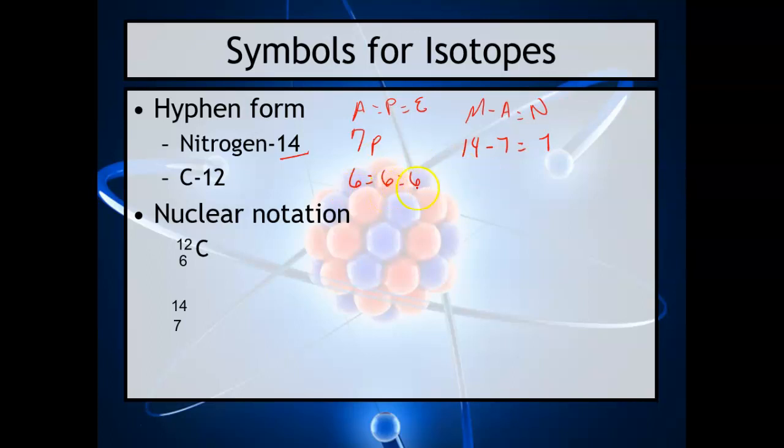Here's another way to see it: it's called nuclear notation. This 12 is your mass number, and the 6 is your atomic number. And here, I don't know what happened here, but there should be an N here. I don't know what happened to my N, but 14 and 7.